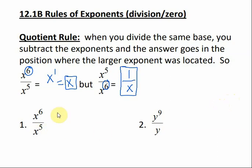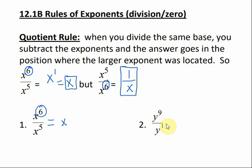Number one: my answer would just be x. My bigger exponent is in the numerator, so my answer is just x. And number two, we have y to the ninth divided by y to the understood one. So if I subtract one from nine, I get eight, and my answer is going to be in the numerator. So this would just be y to the eighth.